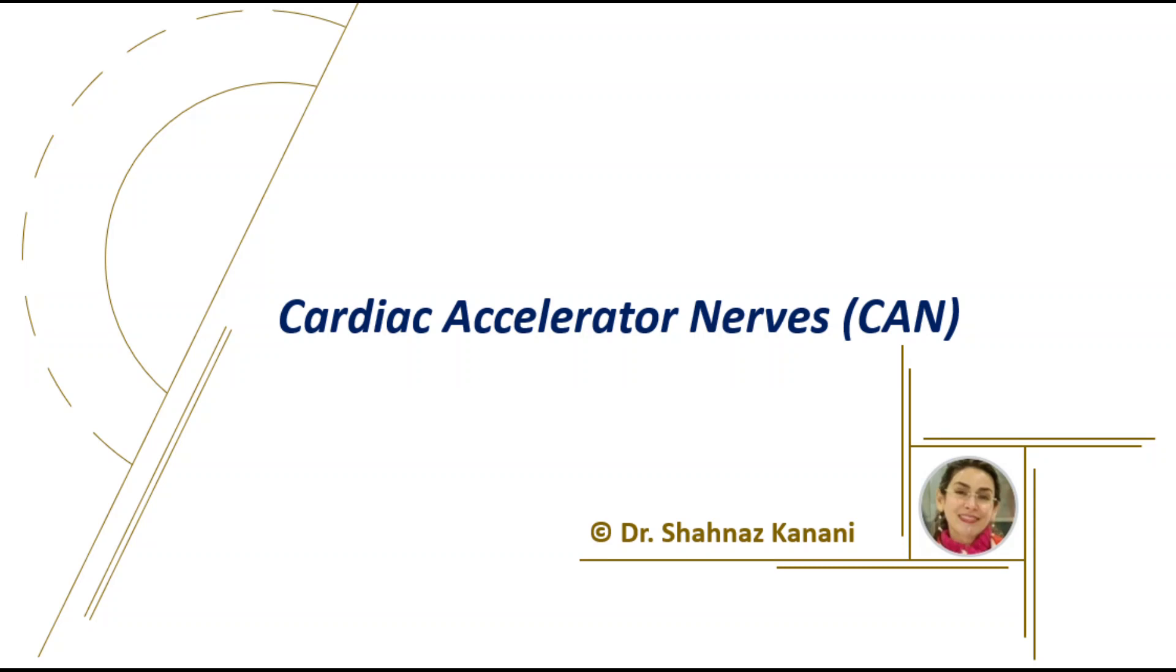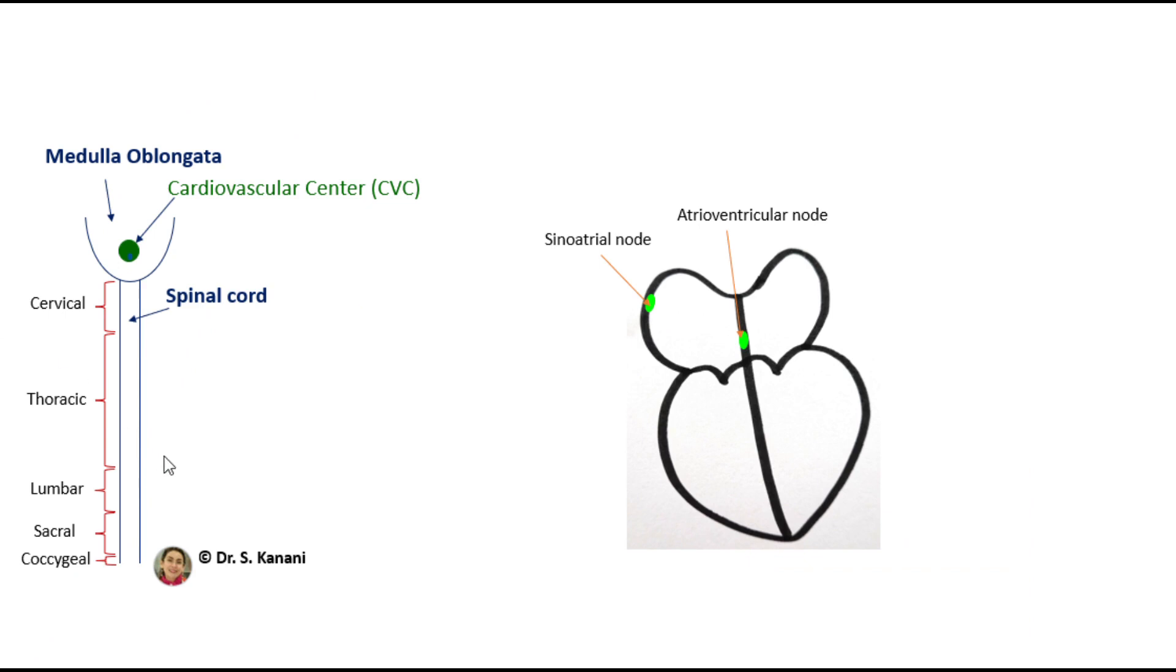Cardiac accelerator nerves are sympathetic nerves that transfer signals from the cardiovascular center to the heart. The cardiovascular center consists of groups of neurons that we have in the medulla oblongata.